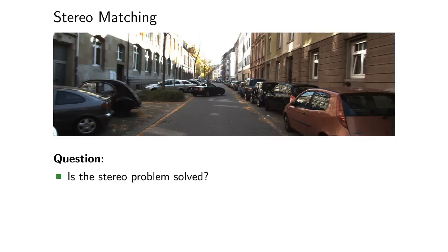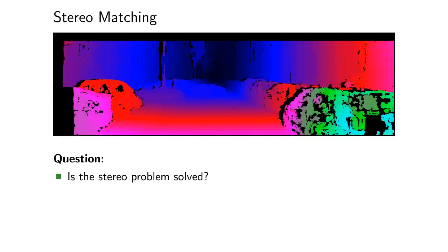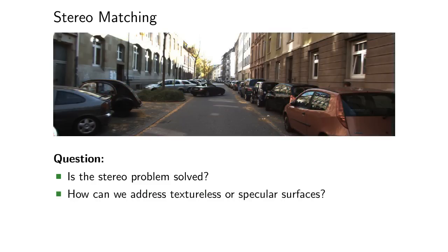Consider this image from the Kitti dataset, for example. While depth in textured areas can be estimated reliably, textureless, reflective, and transparent surfaces still pose significant problems for state-of-the-art algorithms. But how can we address this problem?